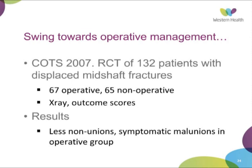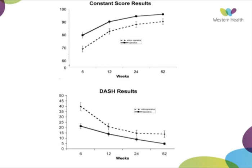In 2007, the Canadian Orthopaedic Trauma Society published results of their randomised controlled trial of 132 patients with displaced mid-third fractures — 67 randomised to operative and 65 to non-operative management. They followed up X-rays for radiographic union, used outcome scores, and measured adverse events. They found statistically significantly fewer non-unions and symptomatic malunions in the operative group. The outcome graphs for both the Constant score and the DASH score showed the non-operative group performing worse at all time points.